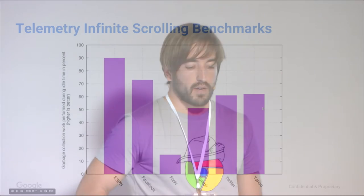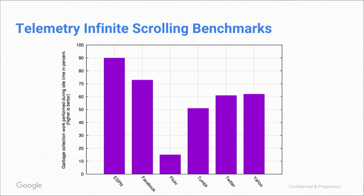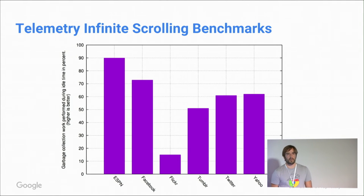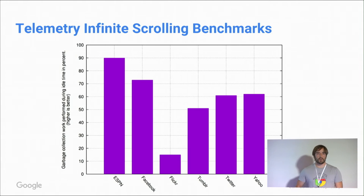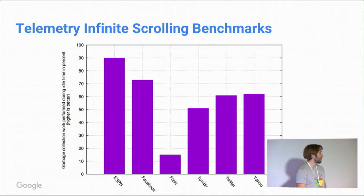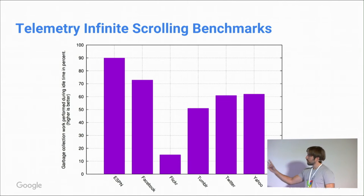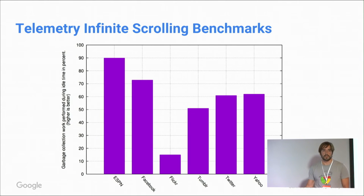We also landed a bunch of infinite scrolling benchmarks on the perf bots. These are super useful for garbage collection — you want benchmarks to run for a long time to generate a bad state in the heap. We scroll widely used infinite scrolling websites for 30 seconds to really trigger a significant amount of garbage collection events. On the y-axis is garbage collection performed during idle time in percent. For some websites it works really well — for ESPN, up to 90%. On average, about 60% of garbage collection time is scheduled during idle time, which is basically getting garbage collection out of your way.